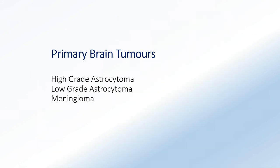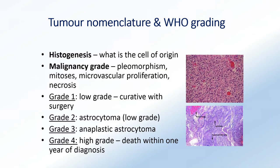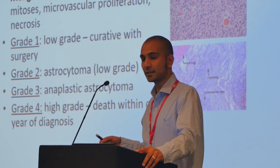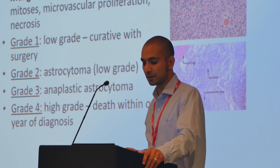Moving on to the intrinsic primary brain tumors, we're going to cover the high-grade astrocytomas - which include glioblastoma - the low-grade astrocytomas, and meningiomas. The tumors are usually diagnosed by a neuropathologist, who will diagnose during the operation - taking a section, smearing it, and doing some staining. They are trying to identify the cell of origin, because when a cancer forms in the brain it's originated from a neuron or a glial cell. If they can identify the cell type, they know what type of tumor the clinical team may be dealing with.